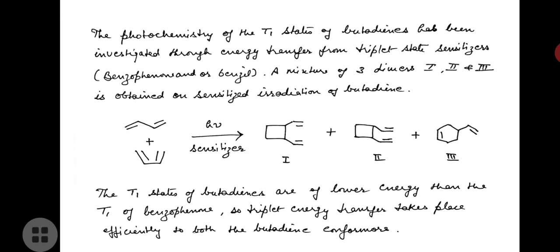The composition of the dimer mixture varies with the triplet energy of the sensitizer used to populate the T1 state of butadiene. When benzophenone is used as sensitizer, the first, second, and third dimers are formed in a ratio of 80:16:4%. When benzyl is used as photosensitizer, the first, second, and third dimers are formed in a ratio of 49:8:43%. The T1 states of butadiene are of lower energy than the T1 of benzophenone, so triplet energy transfer takes place efficiently to both butadiene conformers.